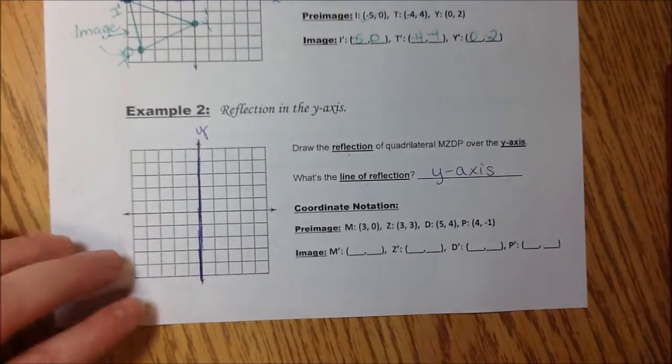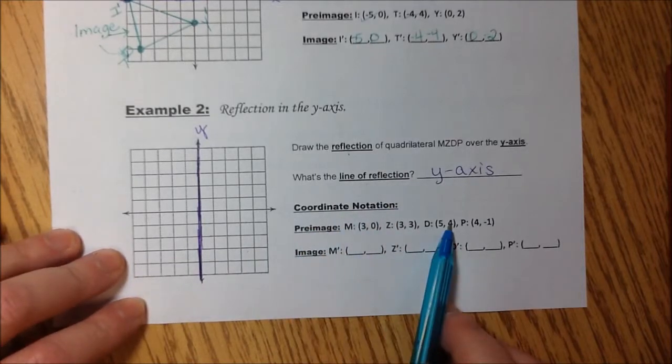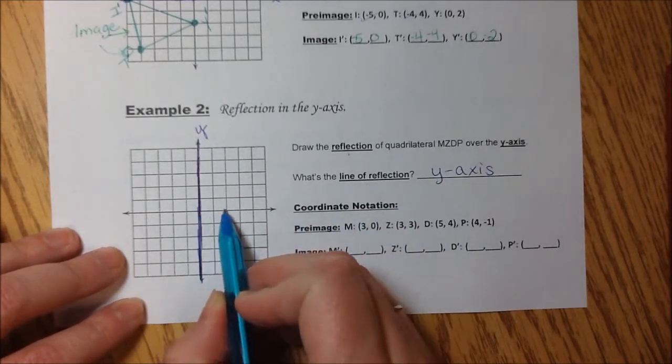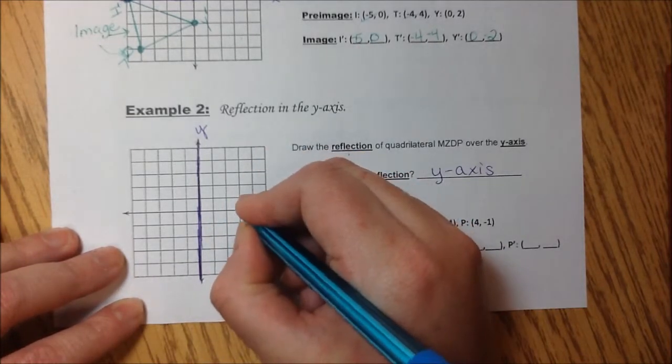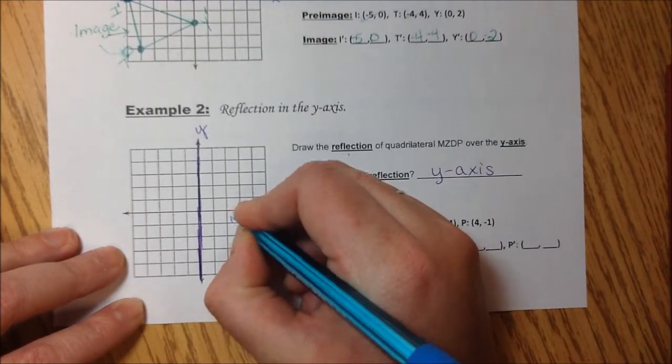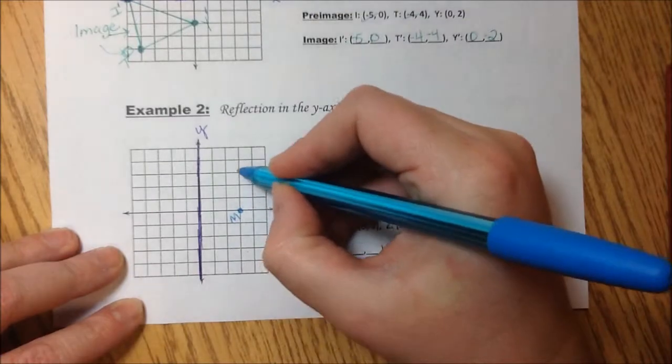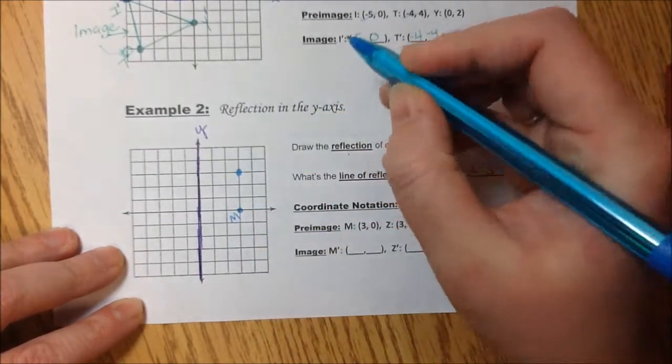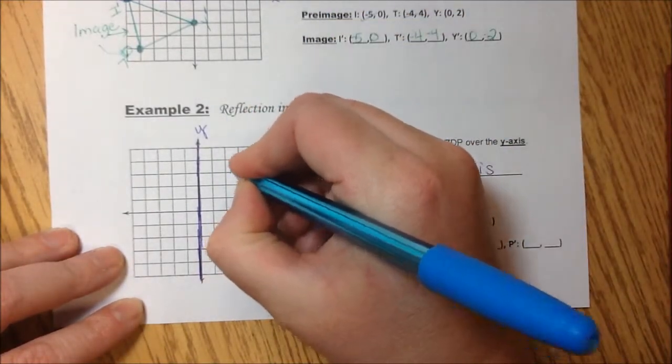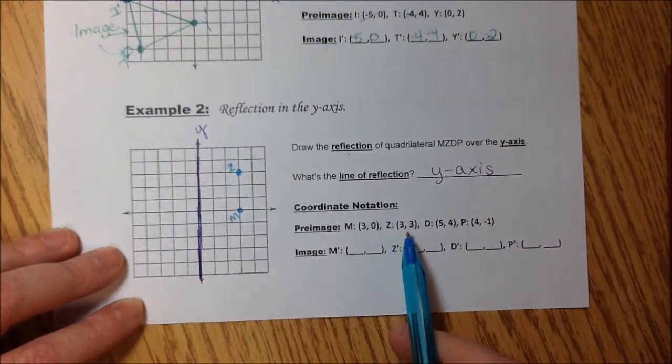Okay. Our pre-image, blue. Coordinate notation, just our ordered pairs. Here's M is 3, 0, 1, 2, 3, 0. This is M. Z, 3, 3, 1, 2, 3, 1, 2, 3. Z. Again, I do not include prime, because this is before the transformation.